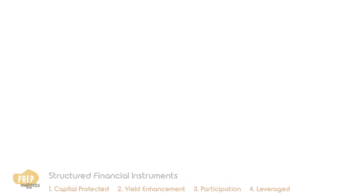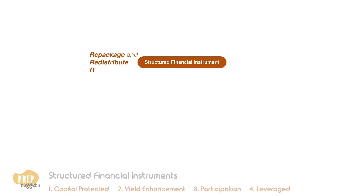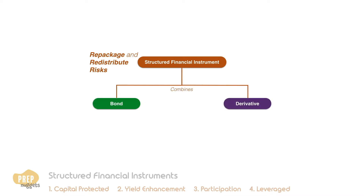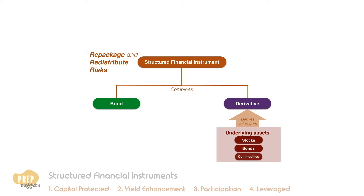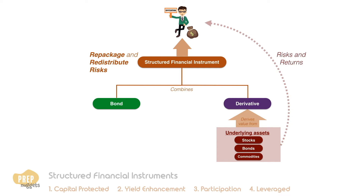A common attribute of all structured financial instruments is that they repackage and redistribute risks. These instruments typically have customized structures that often combine a bond and at least one derivative. Derivatives are financial instruments that derive value from one or more underlying assets, such as equities, bonds, and commodities. As such, the risks and returns to an investor of a structured financial instrument are linked to the performance of the underlying asset.